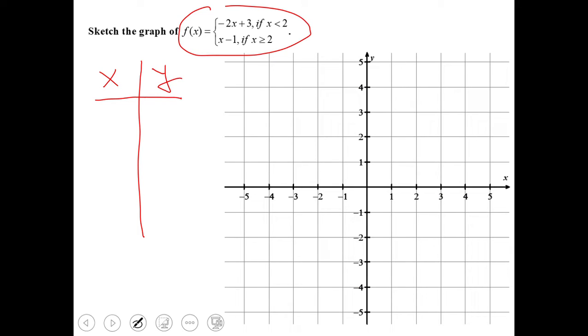I'll make a table with x and f of x, and I'm going to put some points. I'm going to start with that 2 - you see this 2 is an important point. Then I'm going to choose values less than 2, like 1 and 0, and numbers greater than 2, like 3 and 4. Five points should be good enough because we're talking about two rays.